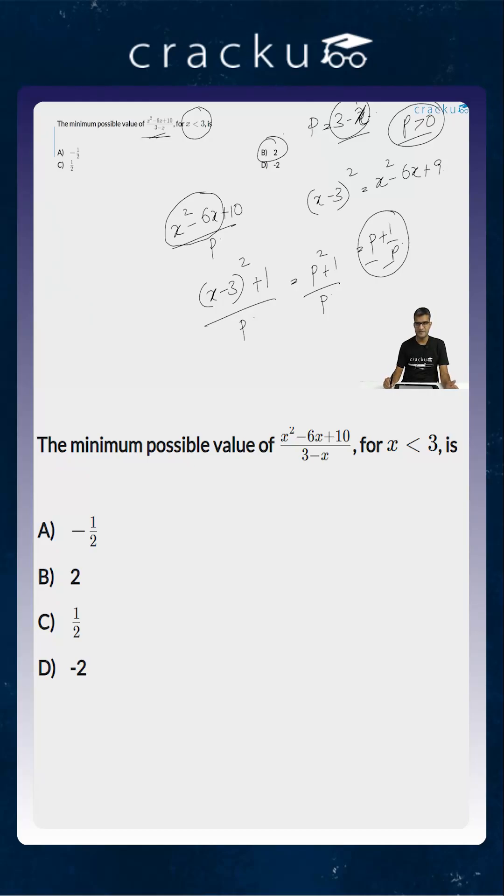You can use the arithmetic mean is greater than or equal to the geometric mean. So (p + 1/p)/2 is greater than or equal to the square root of p × 1/p, which is 1. Therefore, p + 1/p is always greater than or equal to 2 when p is greater than 0. The minimum value is 2, which occurs when p equals 1/p equals 1.